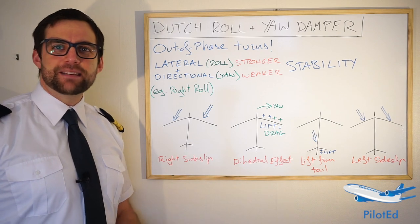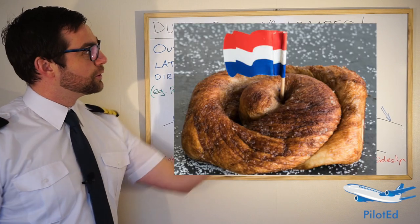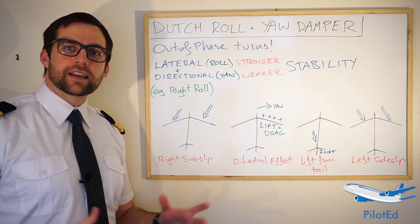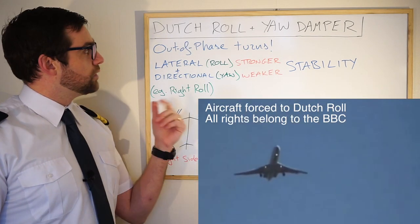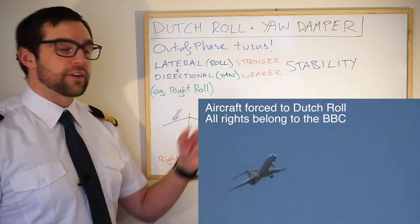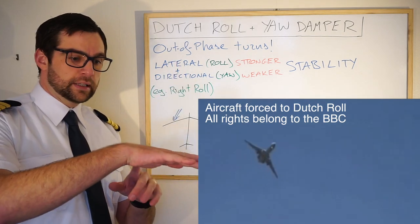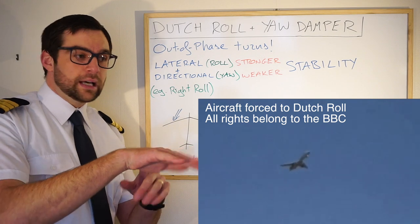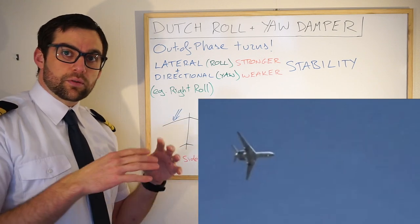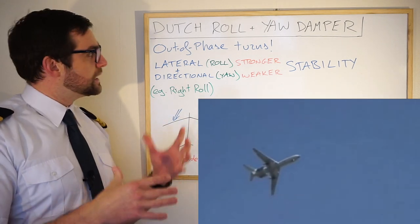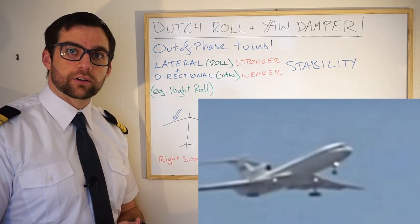Welcome to ATPL Theory. After a long hiatus we're going to be talking about Dutch roll, yaw dampers and the effects they have on aircraft. First of all, what is Dutch roll? A Dutch roll is an out of phase turn essentially. When we roll an aircraft it creates an opposite yaw, and when we yaw an aircraft it creates an opposite roll. This combination is what we call an out of phase turn, and what can cause Dutch roll on some aircraft.